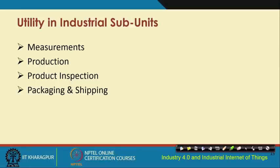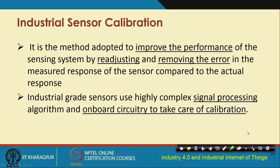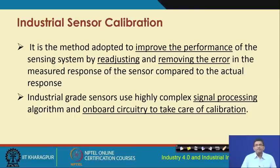In terms of utility in industrial subunits - measurement, production, product inspection, packaging, and shipping - these are some of the utilities of industrial sensors. Calibration of any sensor is very important. Calibration has to be done in order to improve the performance of a sensing system through different adjustment, re-adjustment, and removal of errors. This calibration has to be done because certain sensors would not behave the same way with passage of time. Industry-grade sensors use highly complex signal processing algorithms and onboard circuitry to take care of calibration.